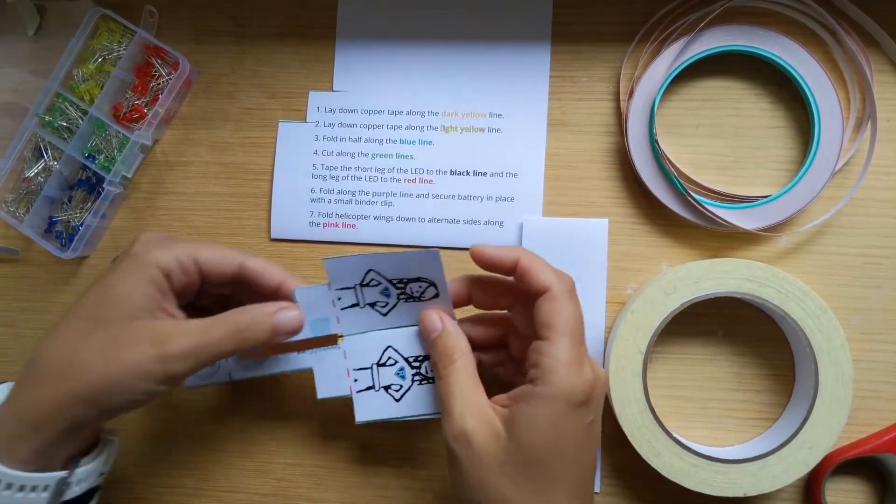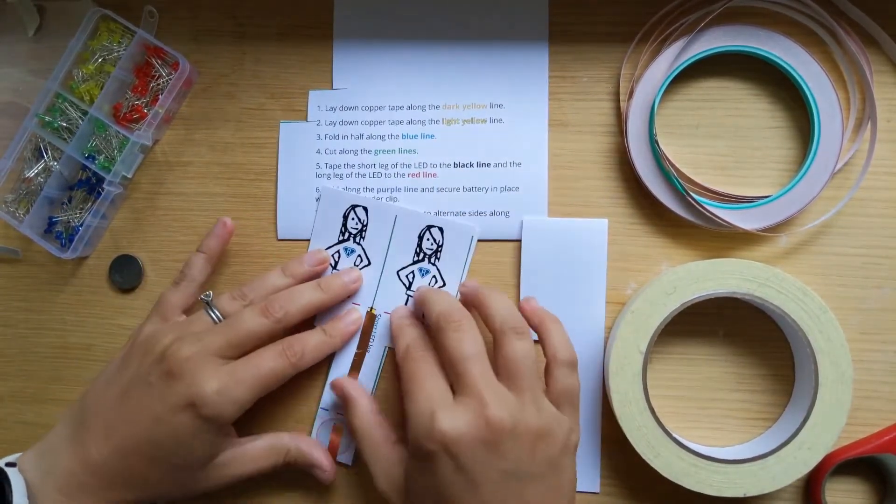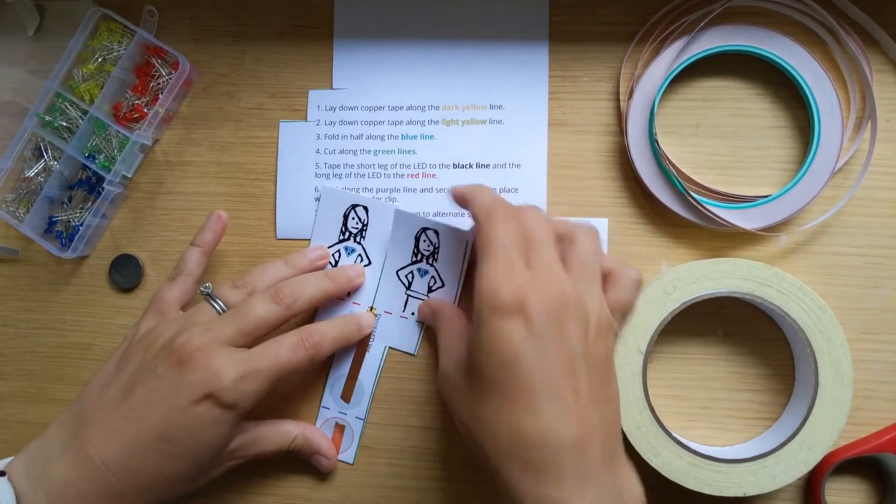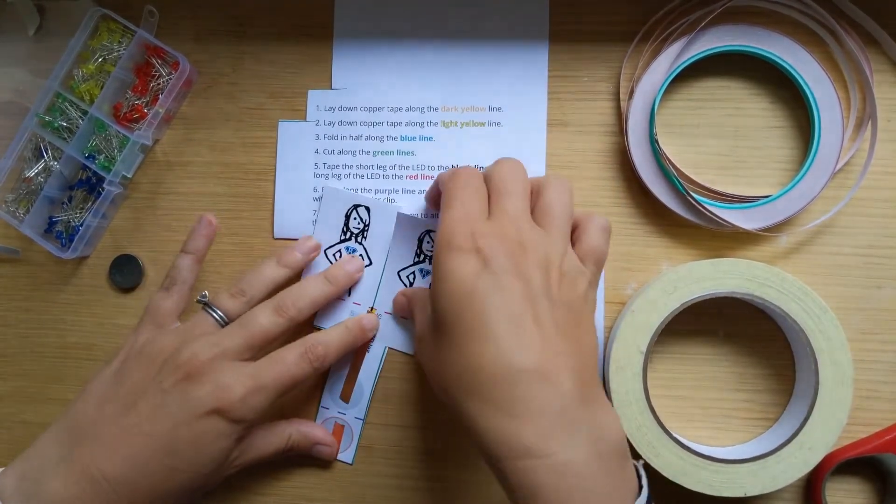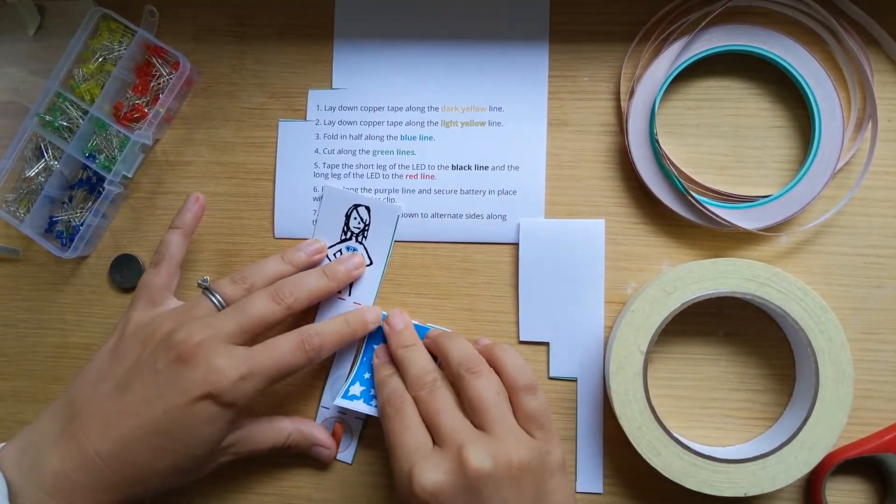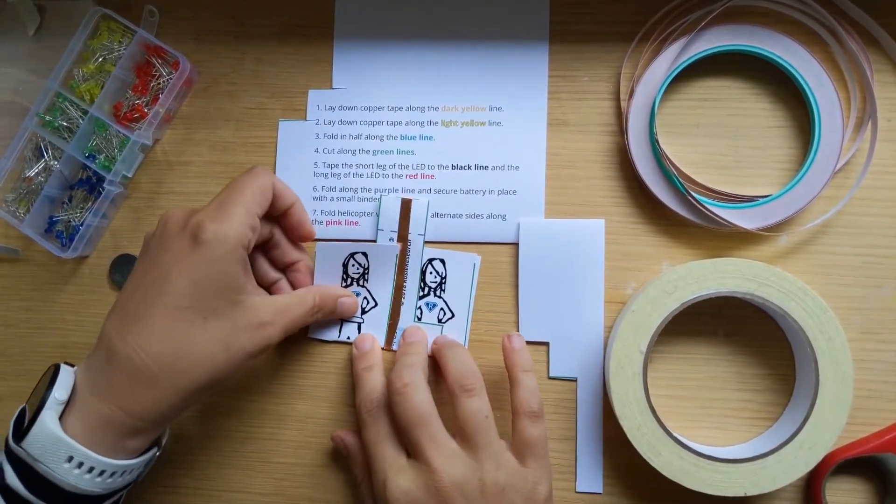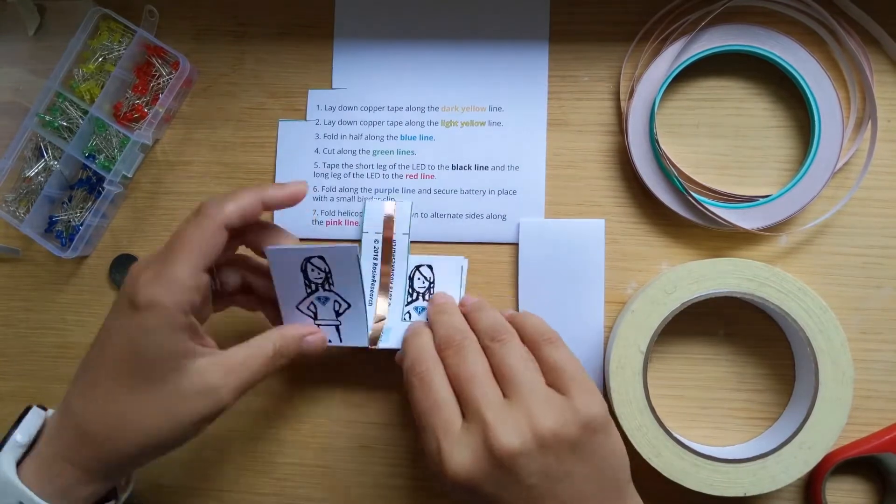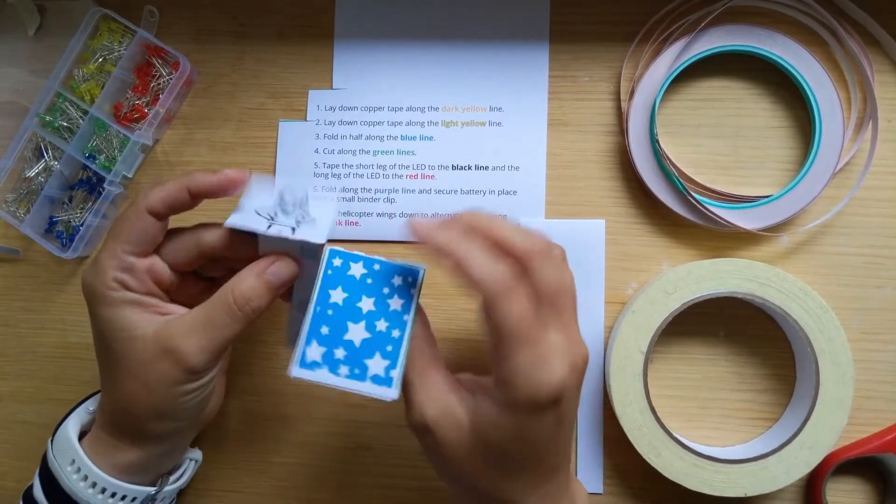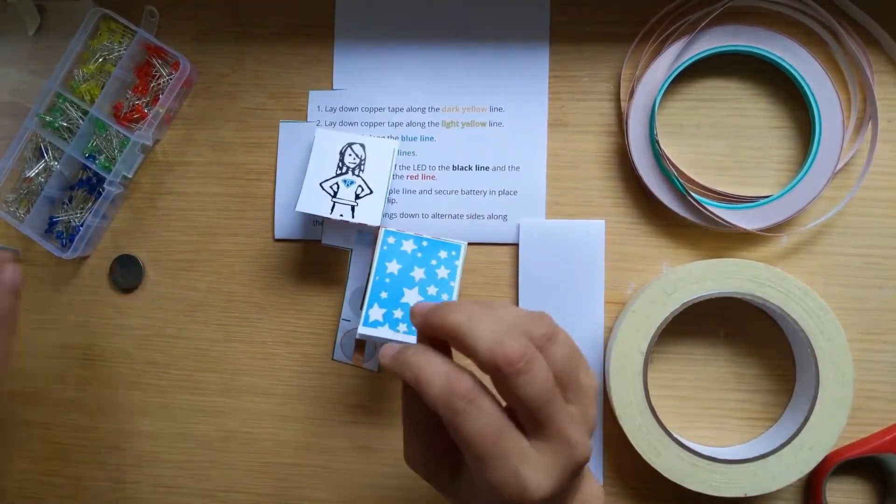So now we are going to add in our LEDs. Before I do that, I'm actually going to bend along this guy. One I'm going to bend forward and one I'm going to bend backward, just so it sort of opens up the spot that I'm going to put the LED. So now let's find our LEDs.